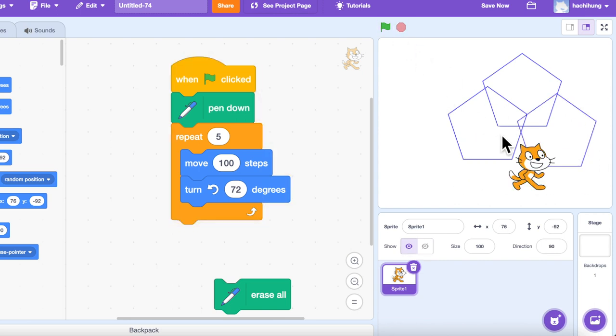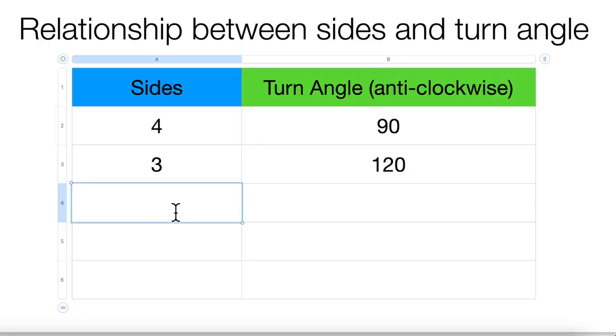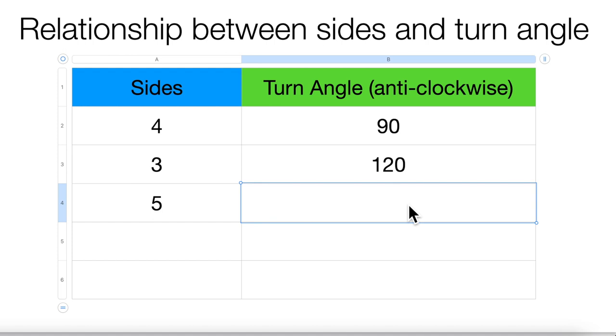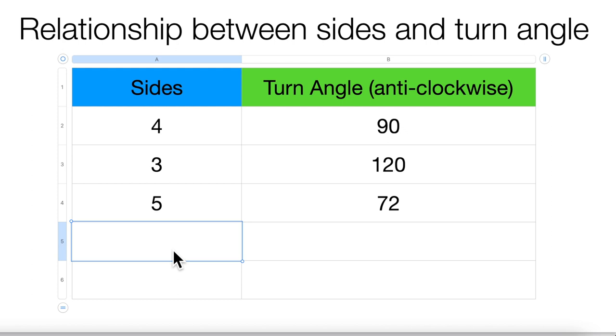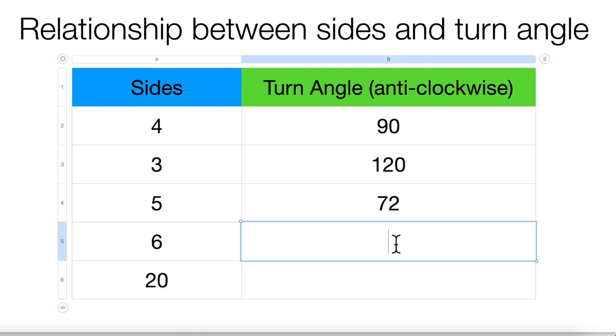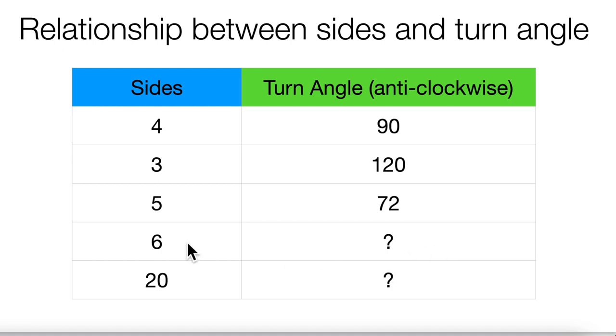Again, and again. And now we can write down for a pentagon with five sides, the turn angle is actually 360 degrees divided by 5, that is 72. And actually, we can apply this formula to other polygons. Let's say for a hexagon or for a heptagon, you can easily find out this turn angle because we can simply divide 360 degrees by the number of sides.